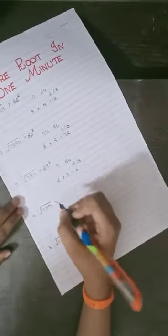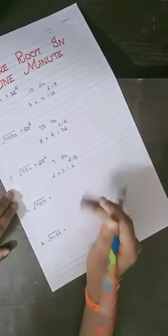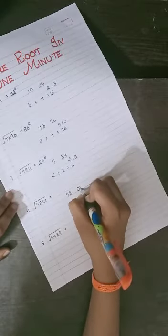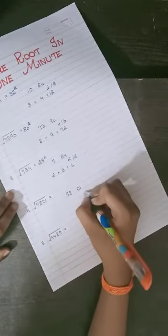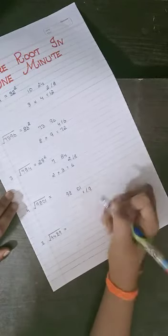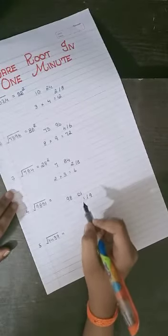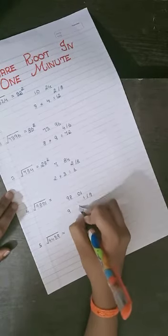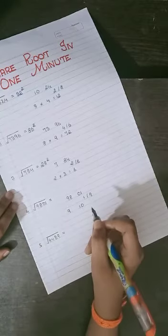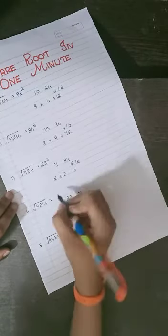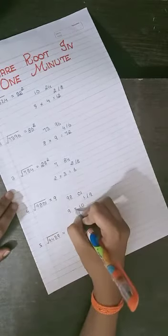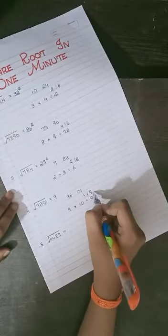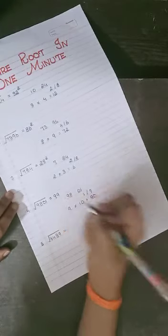Now we will solve the fourth question which is 9801. We split it into 98 and 01. The unit digit is 1, so the answer will end in either 1 or 9. 98 lies between the squares of 9 and 10. Since 9 is smaller, we write 9 in the tens place. Multiplying 9 and 10 gives 90, and since 98 is greater than 90, we take 9. So the answer is 99.